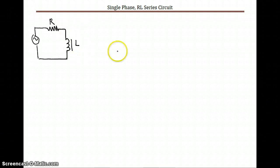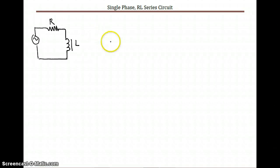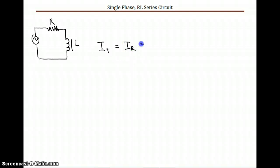Each of these components uses a right-angle triangle to find most of the answers. The easiest starting point is current. The current is the same throughout the entire circuit, so we can say the total current equals the resistive current and the inductive current. There's only one path for current to flow, so it must be the same through each component.